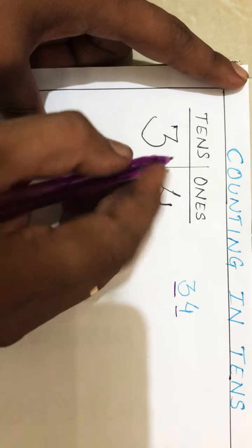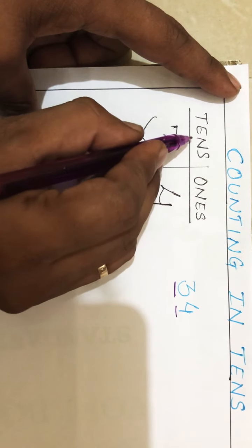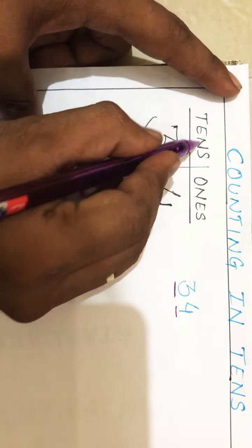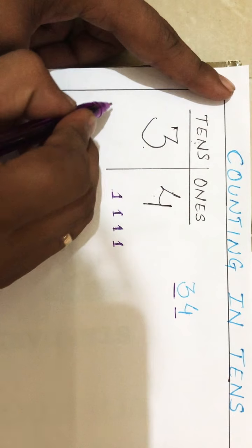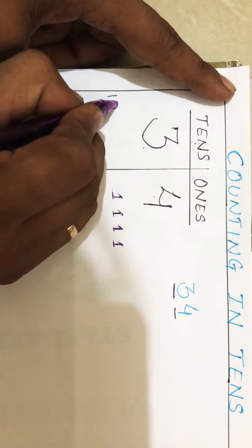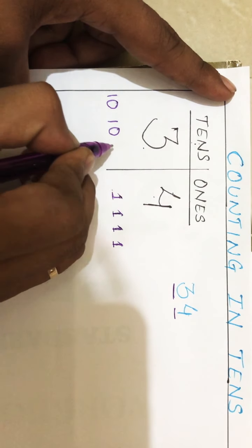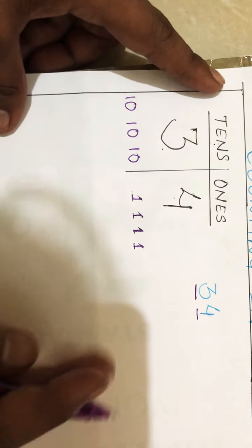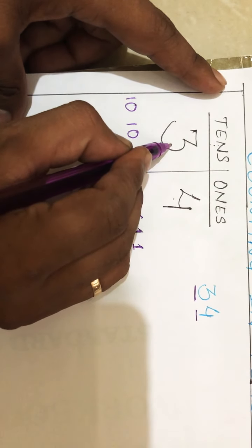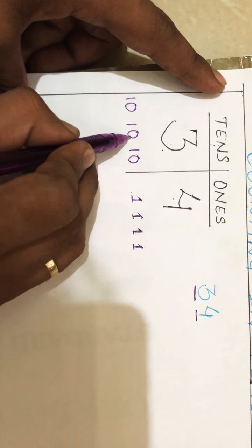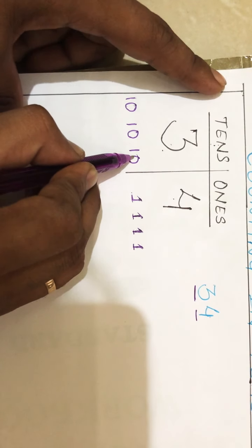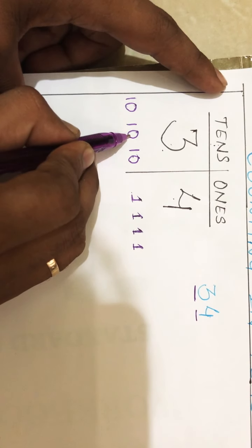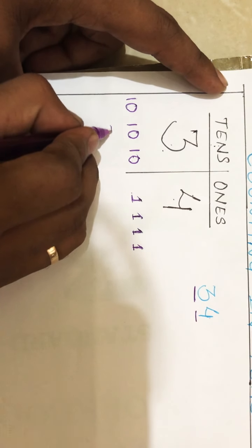And see what is there at tens place. There's a three at tens place. Three tens - one, two, and three. So if it is asked what the place value of three here is, we add three tens: ten plus ten is twenty, twenty plus ten, it will be thirty.